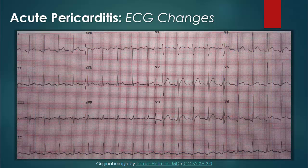A more specific, albeit less sensitive, finding is PR depression. It is also widespread except in leads AVR and V1, in which it can be elevated.